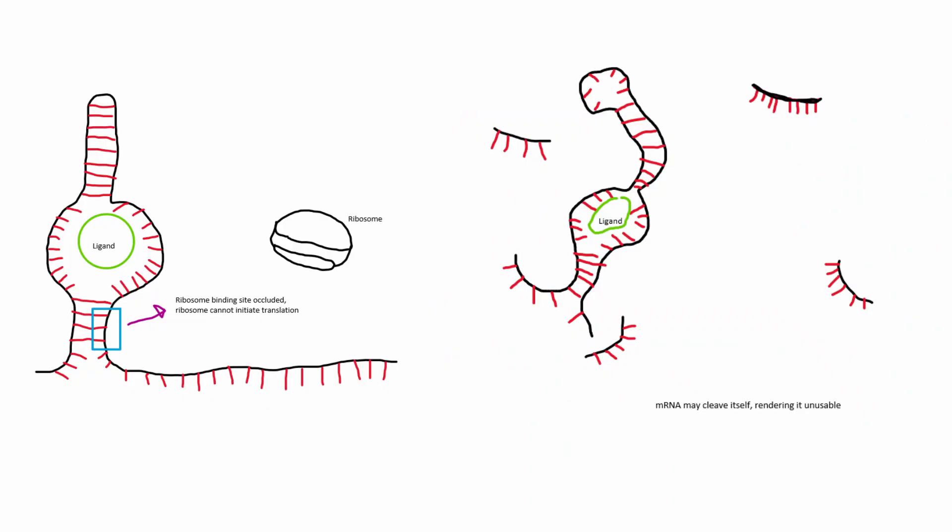This change in structure can have multiple effects, possibly occluding the ribosome binding site, or causing the mRNA to fold in such a way that it can cleave itself. In both of these cases, the mRNA will not be translated into protein and will be degraded.